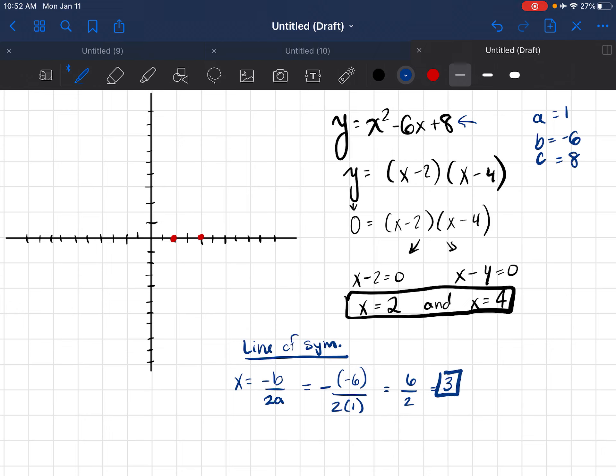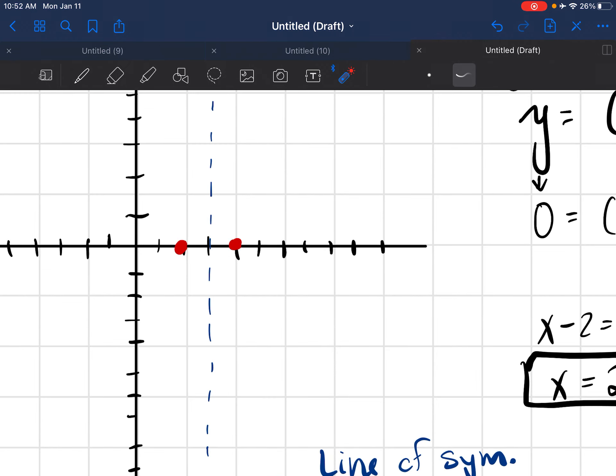And so I'm going to draw a dashed line here through the number 3. I know that is my line of symmetry. And it makes sense because these are on equal sides. I know that the line of symmetry is a reflection. So if this is one space, then on this side it needs to be one space also.